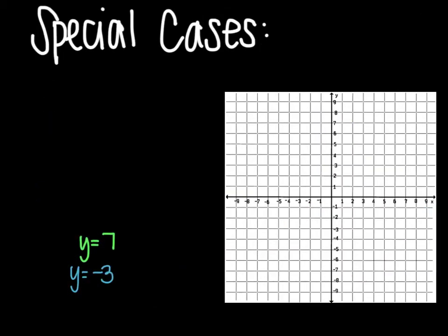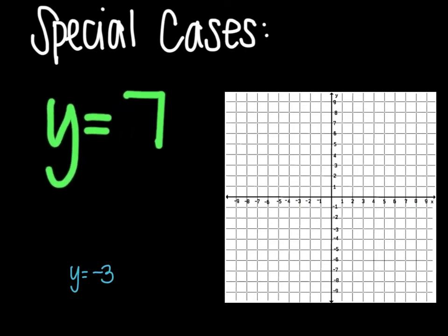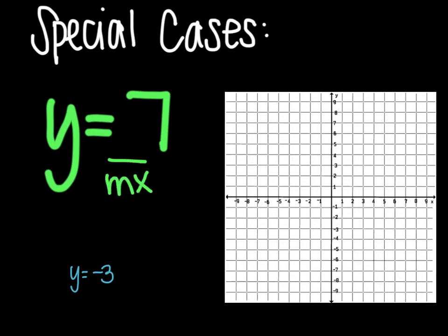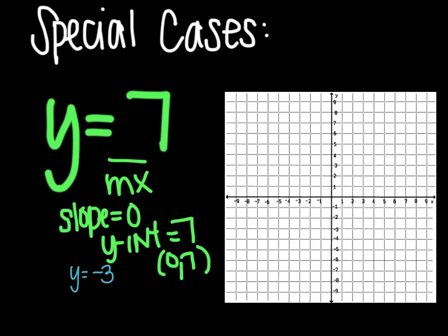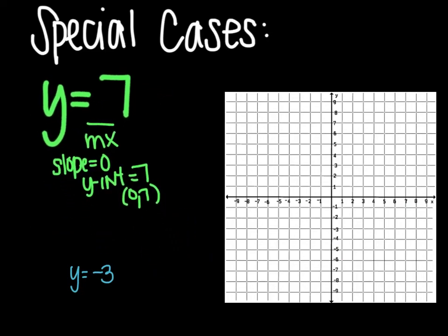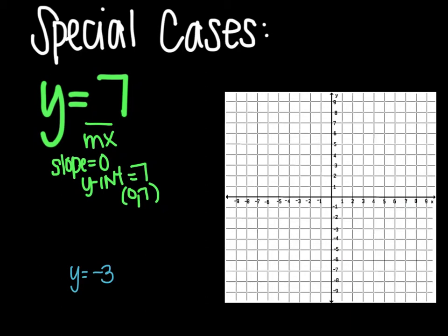There are a couple special cases that I'd like to talk about. Here is y equals 7. And in this one, we're missing the mx part. It's not there. Which means that our slope is actually 0. And then our y-intercept is 7. Which means the point is 0, 7. So what we have to do is make a line that has no slope.